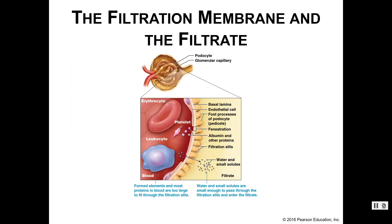So here's what everything looks like. In the capillary you have red cells, white cells, platelets, and albumins — things that are too big to go through the filtration slits. Smaller substances like sodium and potassium can squeeze in between the podocytes and through the filtration slits, so anything that ends up on that side will become part of the filtrate.